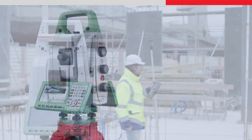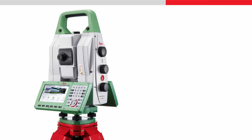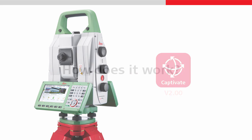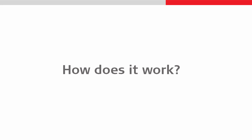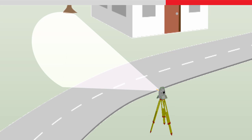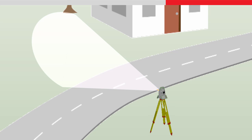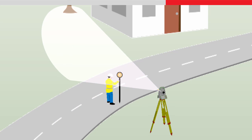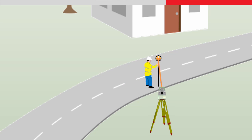Dynamic lock is only available on MS60 multistations using Leica Captivate version 2 or higher. Dynamic lock works by the multistation sending out an invisible vertical laser fan with a width of plus or minus 20 degrees to scan for reflective targets. If a target crosses this laser fan, the multistation will detect the target within the fan, quickly perform a search, and then lock to the target, even if it is moving.